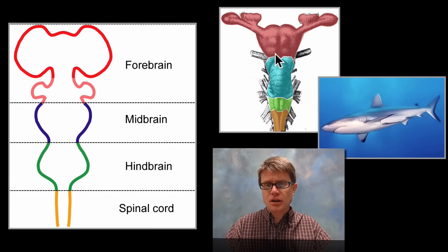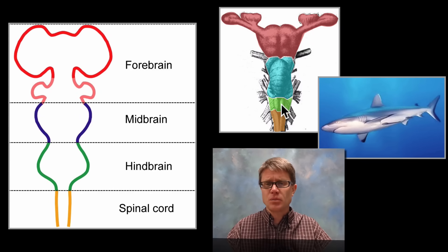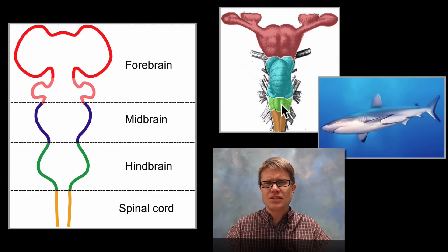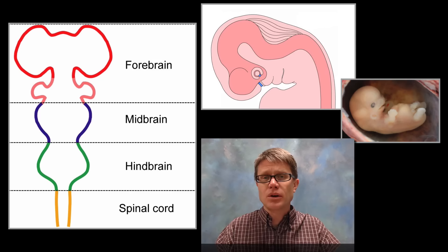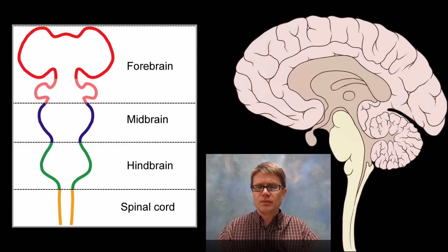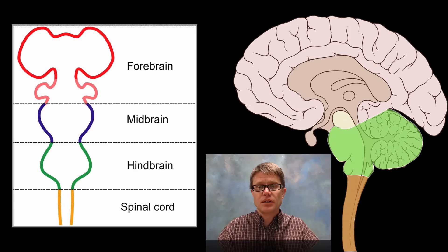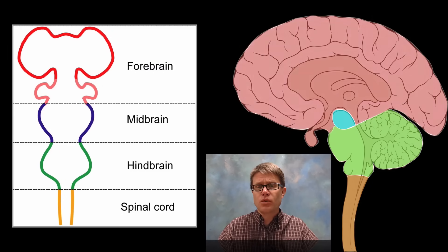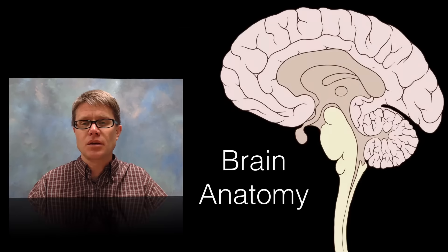One thing you should remember is that the closer we are to the spinal cord, the more basic the functions are. In the hindbrain it's going to be things like keeping the heart beating, circulation, and digestion. But when a shark decides to attack or has an emotional response, that's way up in the forebrain. Now if we look at you when you were really little — when you were an embryo — you had a brain that looked very similar: spinal cord, hindbrain, midbrain, forebrain. But during development that brain changes radically. In an adult brain the forebrain is enormous, and that's where emotions, memories, and all the thinking we generally attribute to the brain takes place.